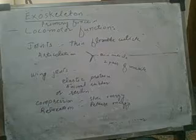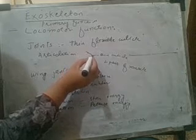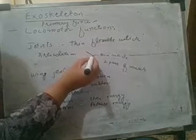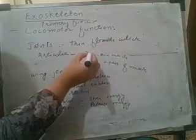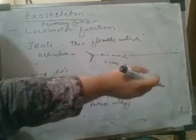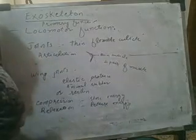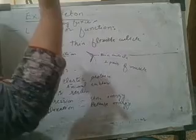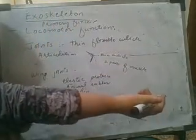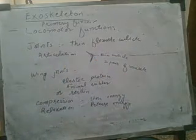Where do we have articulation? Where we have a thin flexible cuticle. And here, two pairs of muscles are attached — one is on this side and one is on the opposite side. When both muscles work in opposite directions, the muscles are relaxed and compressed alternately. We call this antagonistic muscles.